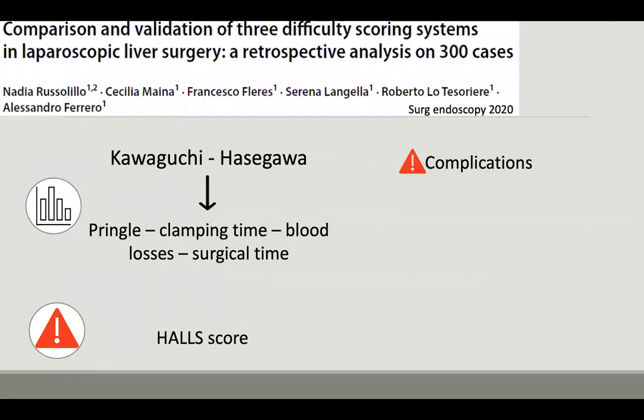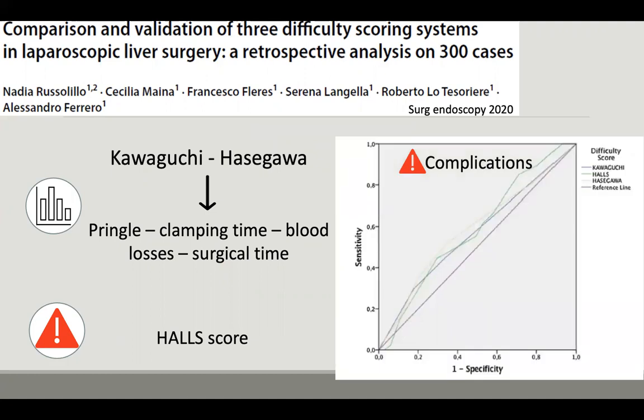Recently, there are few papers in the literature comparing the outcomes of liver resections with different difficulty scores. These show that Kawaguchi and Azagawa were related to the duration of Pringle maneuver, clamping time, blood losses, and surgical time, whereas ALS was not related with these intraoperative variables. However, complication rate was not related with these difficulty scores.